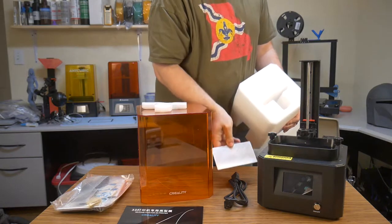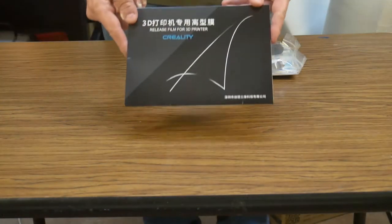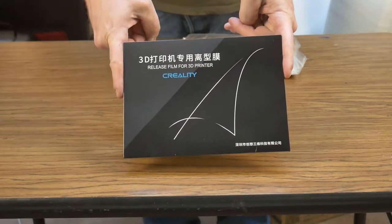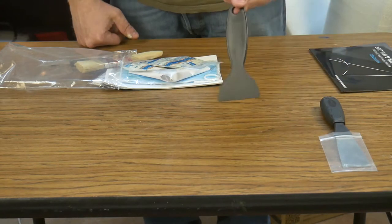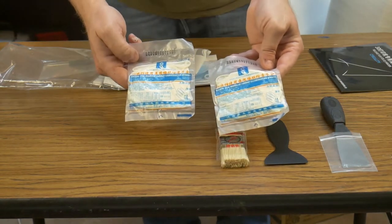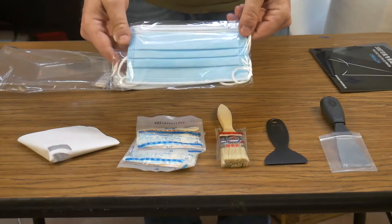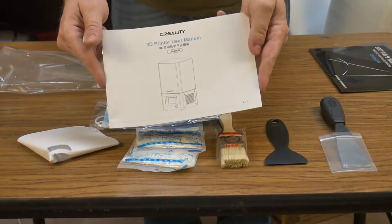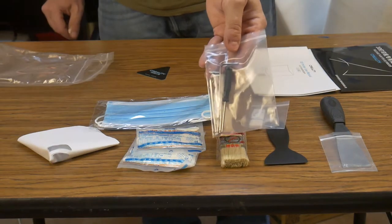Now that everything has been unpacked, let's see what is provided with this 3D printer. You get a spare FEP release film, a cheap putty knife, a plastic putty knife, a paintbrush, a couple pairs of disposable gloves, some resin strainers, a paper mask, a booklet of instructions, a USB drive, and some assorted tools.